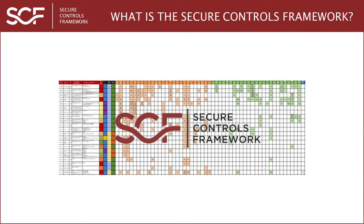In simple terms, the SCF is a meta-framework — a catalog of controls made up of over 100 cybersecurity and data privacy laws, regulations, and frameworks. This control catalog contains roughly 1,200 controls and is logically organized into 33 domains.